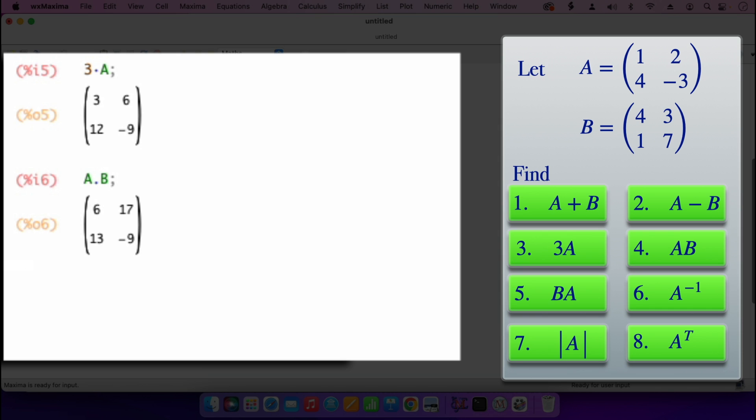So that's the product of the two matrices, A and B, multiplying the row by column, matrix multiplication, that's the result there. Remember we are using a dot instead of the times when we are doing matrix multiplication in Maxima.